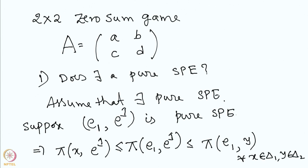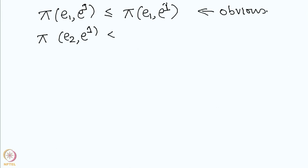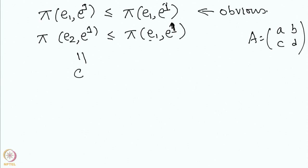Let us check the conditions. We need to check pi(e1, e1) ≤ pi(e1, e1), which is of course an obvious statement. The next condition is when player 1 selects row 2 and player 2 selects column 1. With the matrix entries A, B, C, D, this gives us C ≤ A. This is one condition.